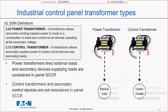My final set of definitions: a power transformer is a transformer whose secondary supplies a load — it might also supply a combination of loads and the control circuit. If it goes to a load at all, it's a power transformer. If it goes to control only with no loads off that transformer, then it is a control transformer. Power transformers are included in our panel short circuit current rating; control transformers are not.